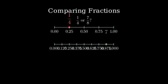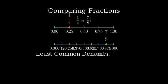To compare these fractions more easily, we need to convert them to have the same denominator. The least common denominator of 4 and 8 is 8. To convert 1 fourth to eighths, we multiply both the numerator and denominator by 2.